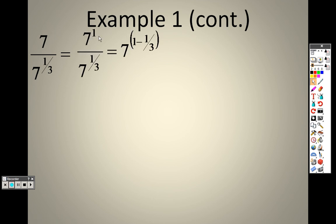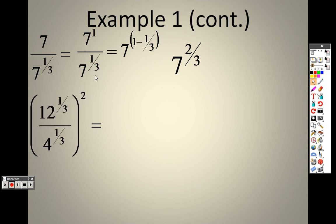So really what I'm saying is I need to take 1 and subtract that from a third. 1 minus a third is 2 thirds. So all I have left is 7 to the 2 thirds. The key here is remembering that division means subtraction.